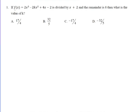If f of x is equal to 2x cubed minus 2kx squared plus 4x minus 2, is divided by x plus 2, and the remainder is 8, then what is the value of k?